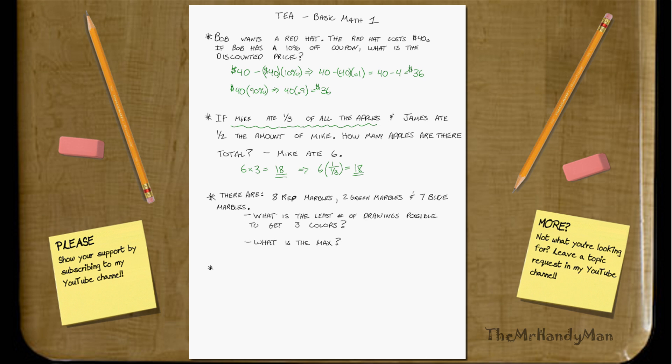Well, you got three colors, three draws. And the reason that is, is because there's three different colors, and what if you got a red, a green, and then a blue right off the bat? You're just the luckiest you could be. That's the best-case scenario.